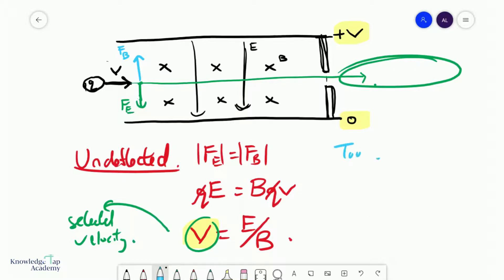Let's see what happens if your velocity is too fast or too high. If your velocity is too high, you'll notice that the magnetic force depends on the velocity, but the electric force does not.